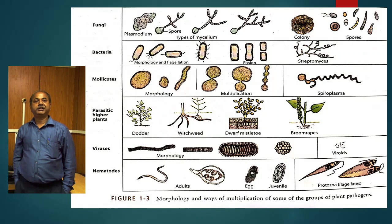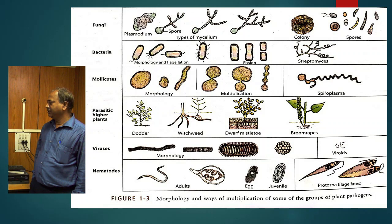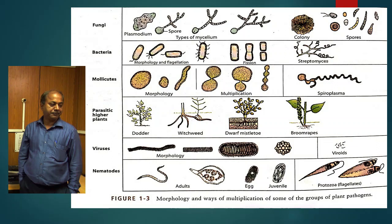Any organism which causes disease is called a pathogen, and broadly speaking this term is limited to microorganisms. In that case, fungi, bacteria, then mollicutes, then parasitic higher plants, viruses, and nematodes are included.